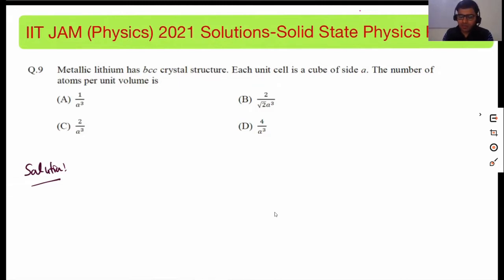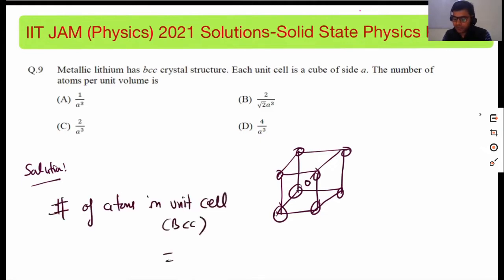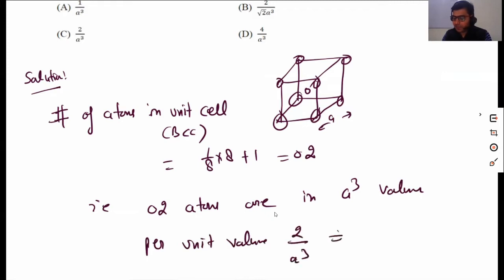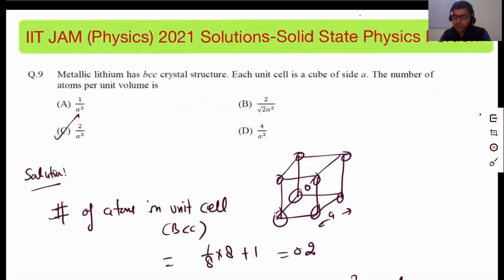Because there are two atoms per unit cell and the volume of the unit cell is A cubed, the number of atoms per unit volume will be 2/A³. In a BCC structure, we have eight corner atoms each shared by eight unit cells — one-eighth times eight — plus one body-center atom, giving two atoms per unit cell total. So per unit volume, 2/A³ atoms will be there. Option C is correct.